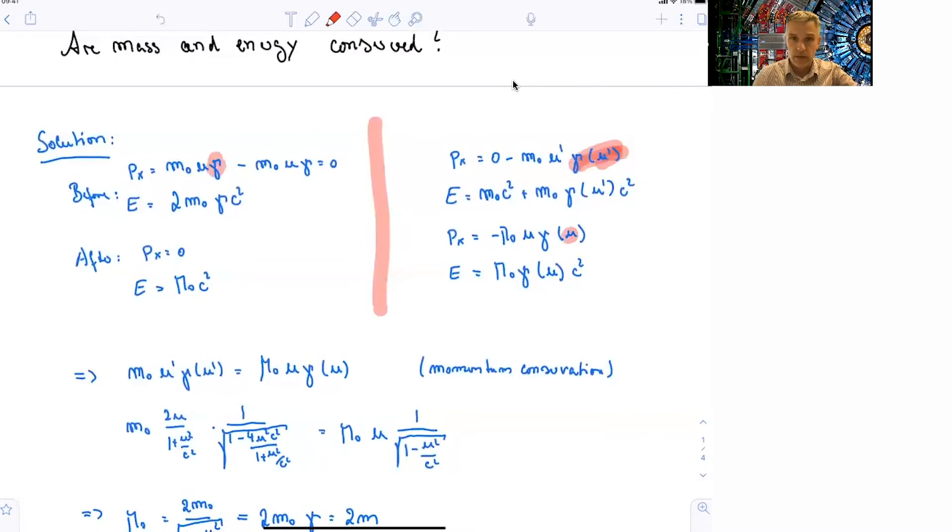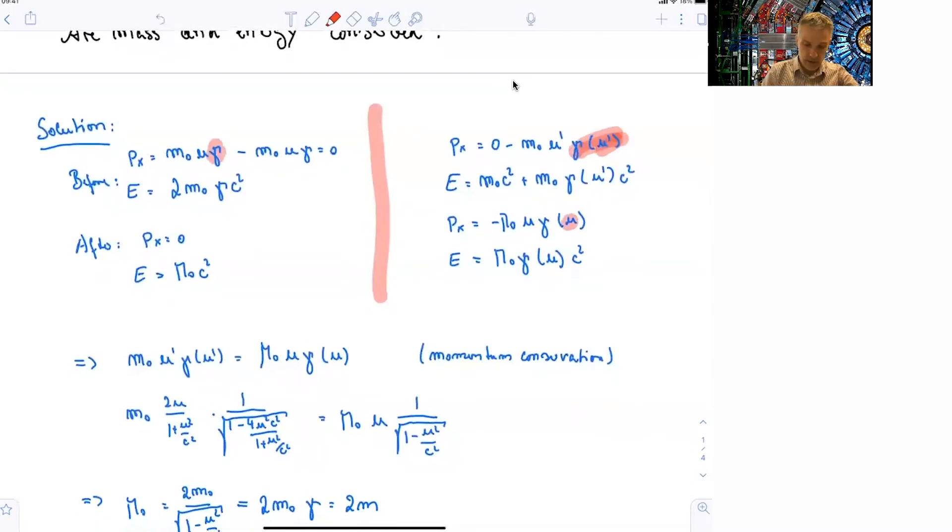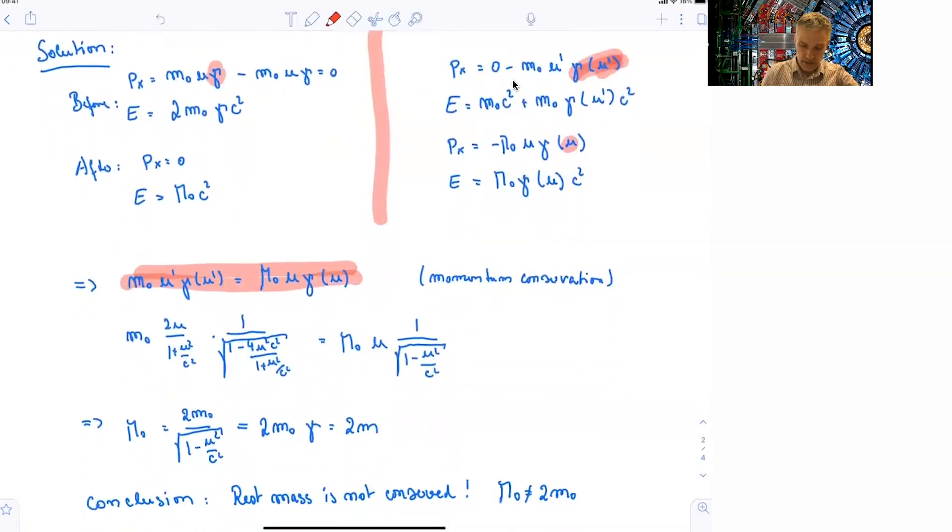And the energy is large M times gamma of u times c square. OK, good. So now we can use momentum conservation and find this equation here. And from which we can then calculate that the large mass is equal to 2 times the smaller mass.